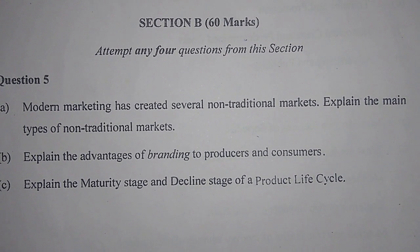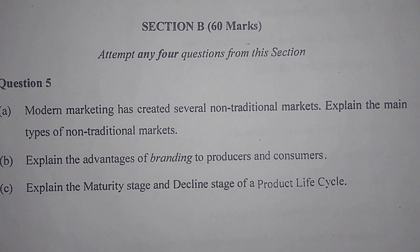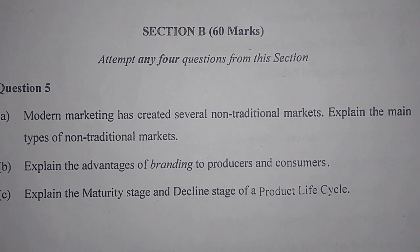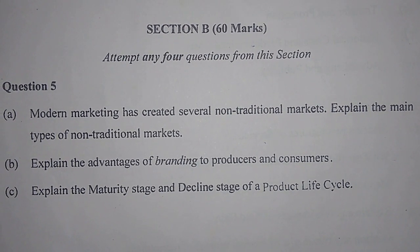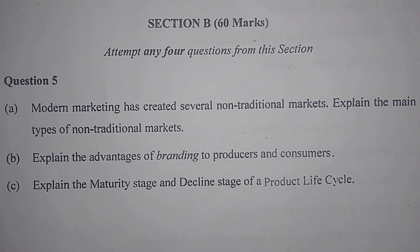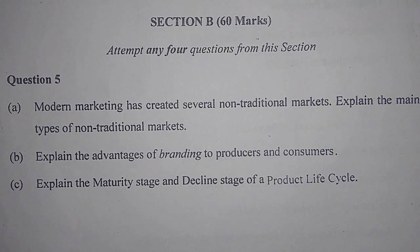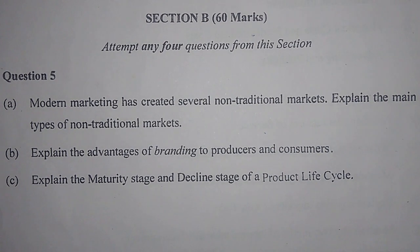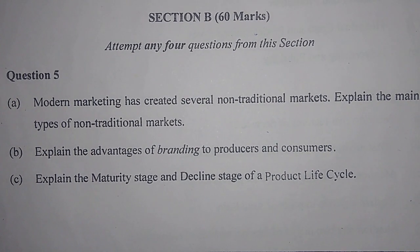The first type is catalog marketing. In this type of market, a catalog and a sample of the product are kept in the showroom. The catalog contains the details of the goods and their prices. The consumer selects the goods by reading the catalog and examining the sample. The second one is in-house marketing.